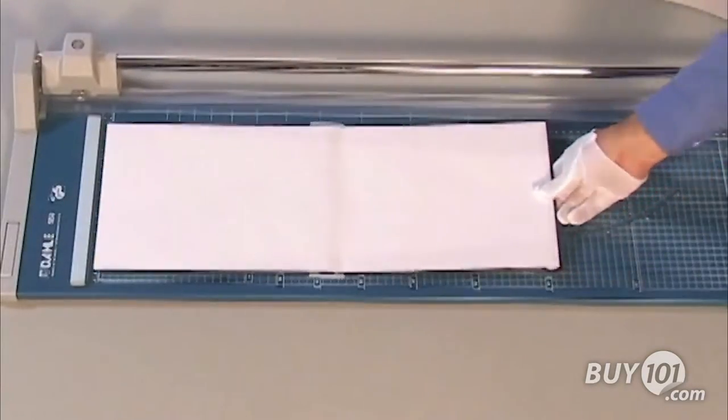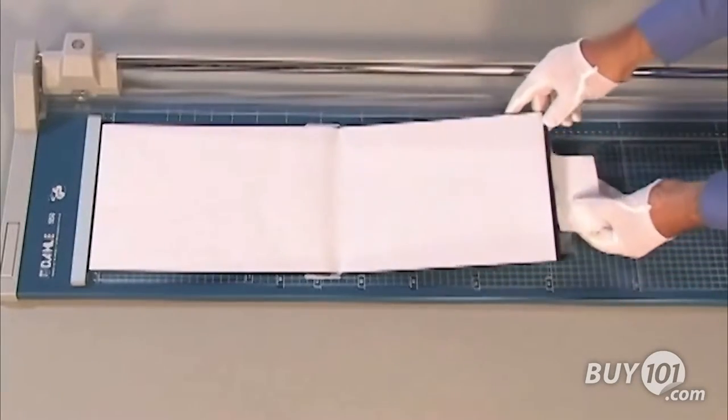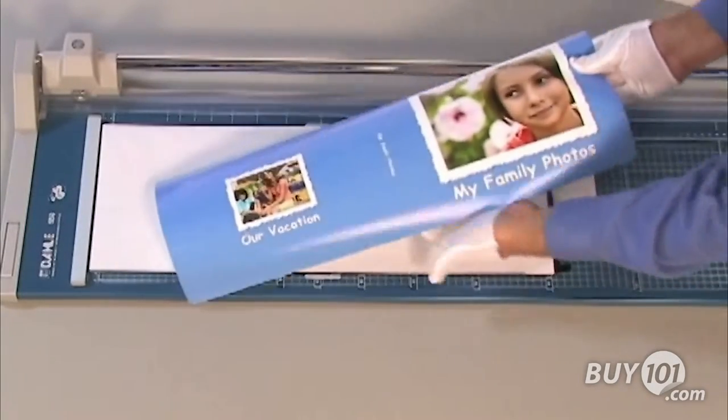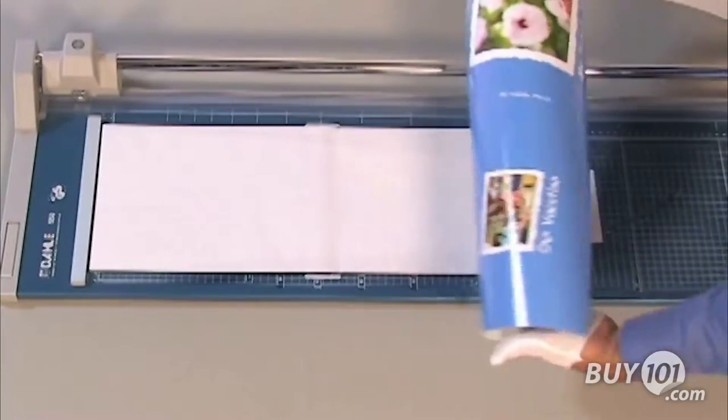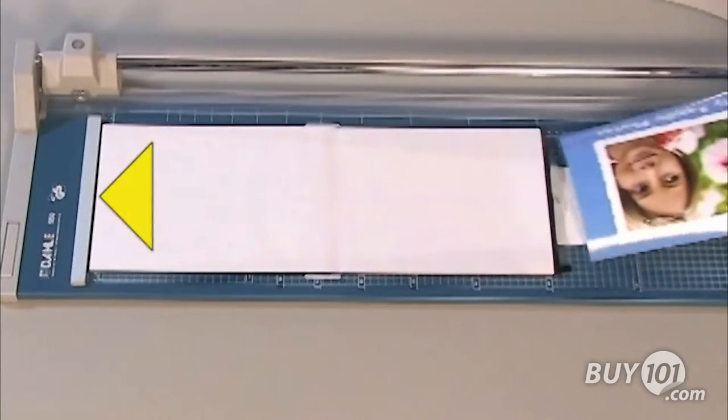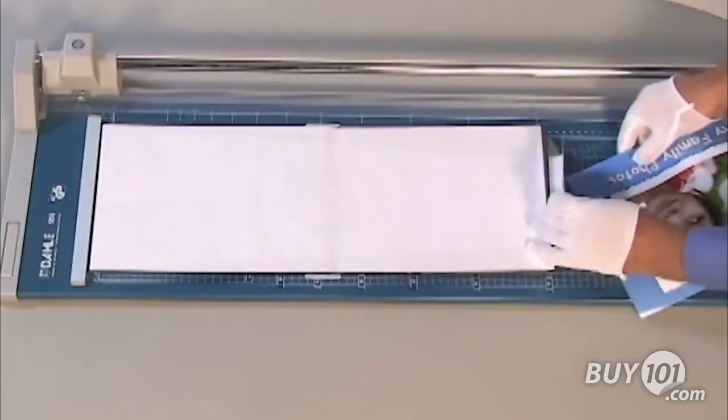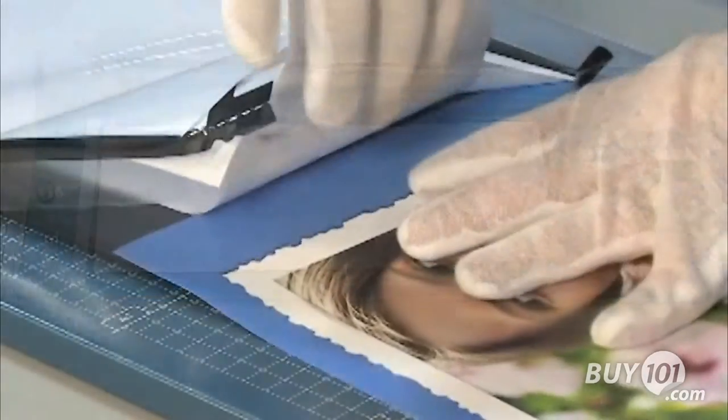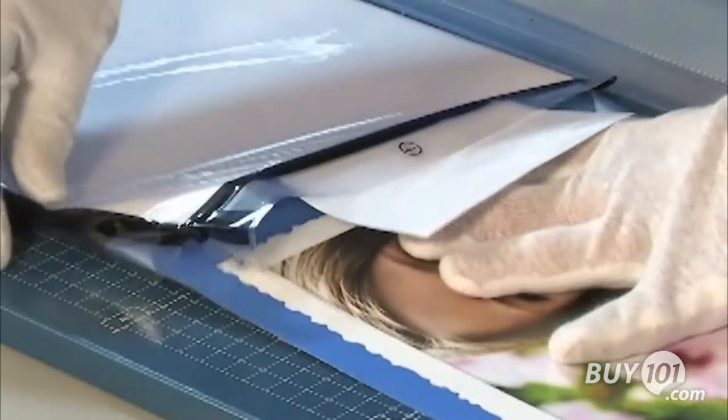Place the custom cover white side up on the trimmer. One end of the cover has a white flap on the underside. This end must be on your right. Push the other end against the paper guide. Reach under the right side of the cover and unfold the white flap so that it extends to your right.